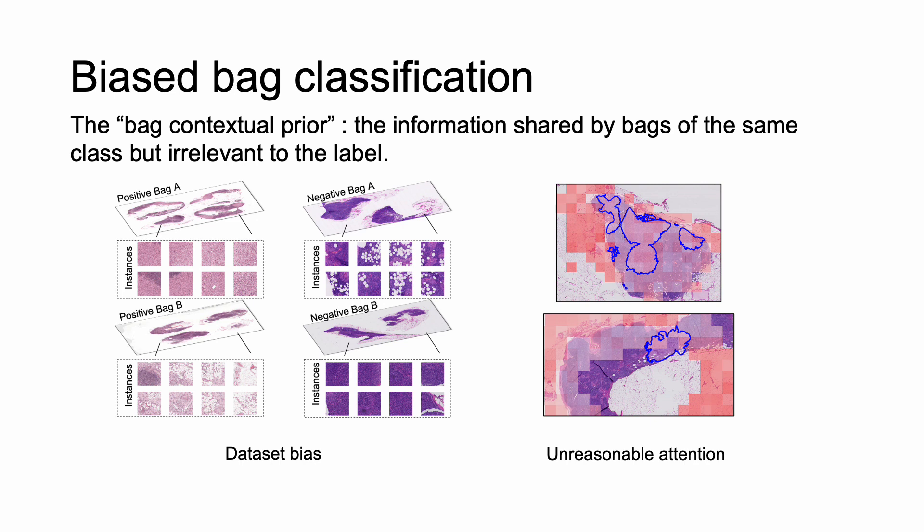Another example is that even when the prediction is correct, the underlying visual attention is not reasonable. As can be seen, the high attention scores are put on these irrelevant instances, which are outside the blue curves in the bags. And we argue the bias is caused by the bag contextual prior: the information shared by bags of the same class, but irrelevant to the label. And we try to find a more efficient mechanism for multiple instance learning.